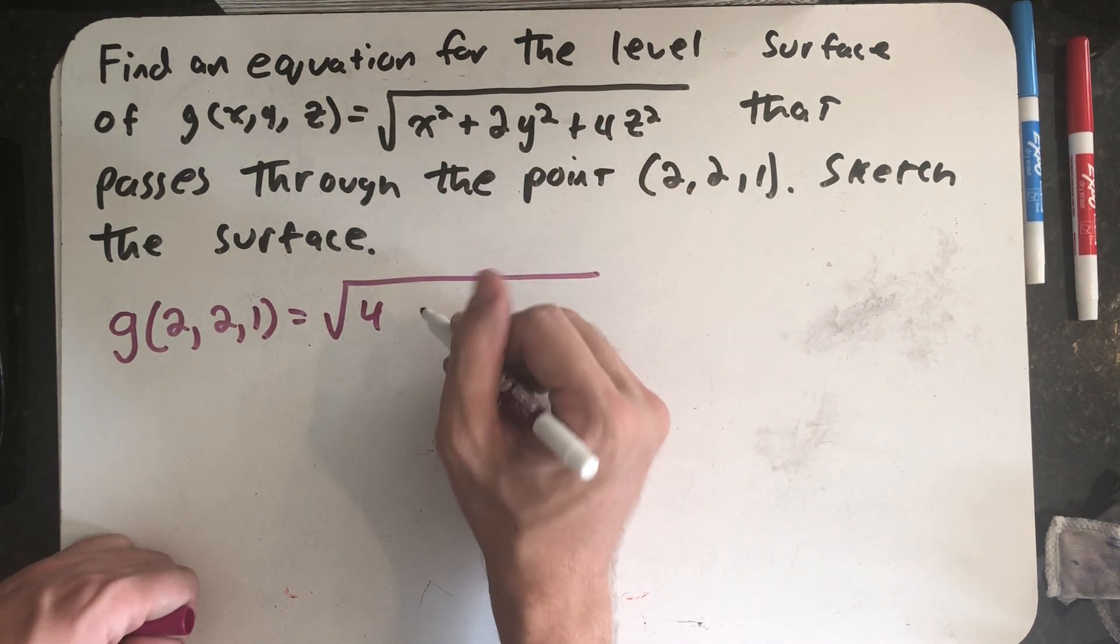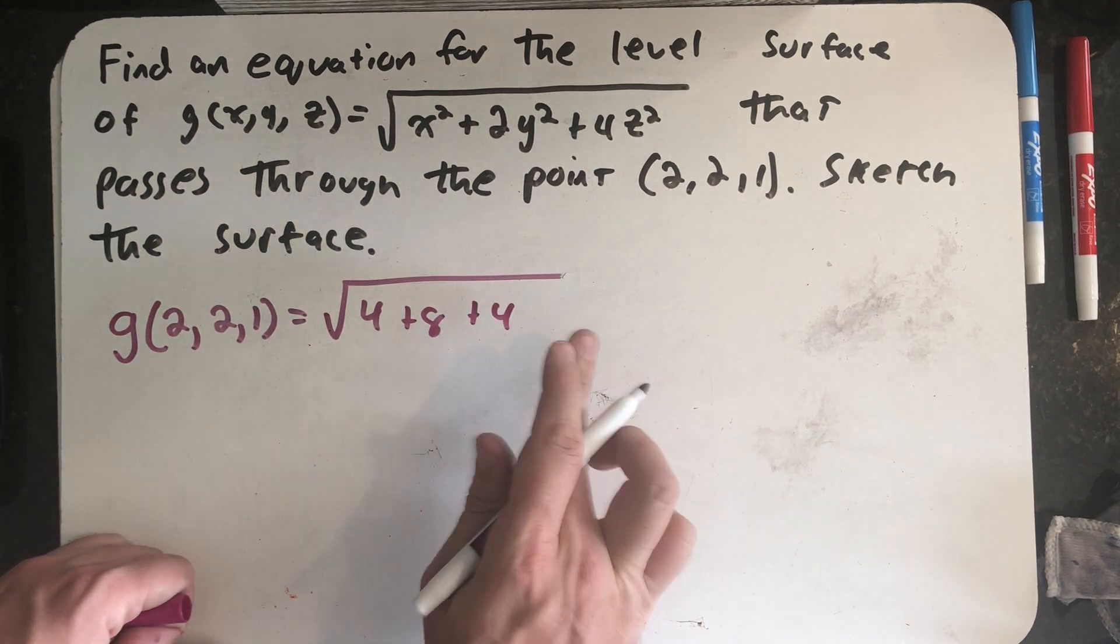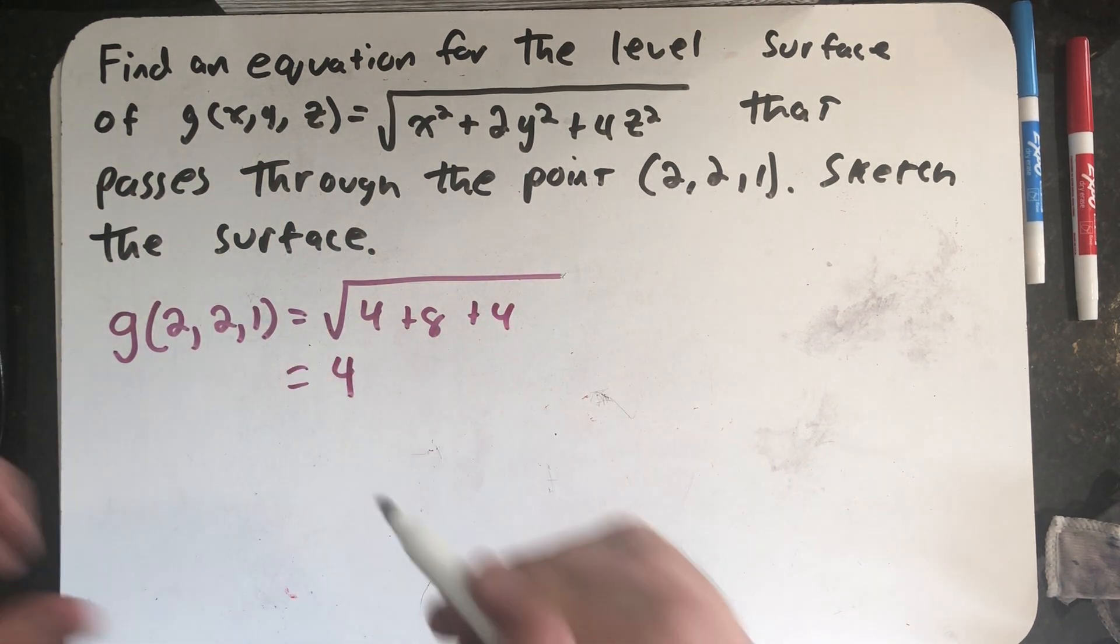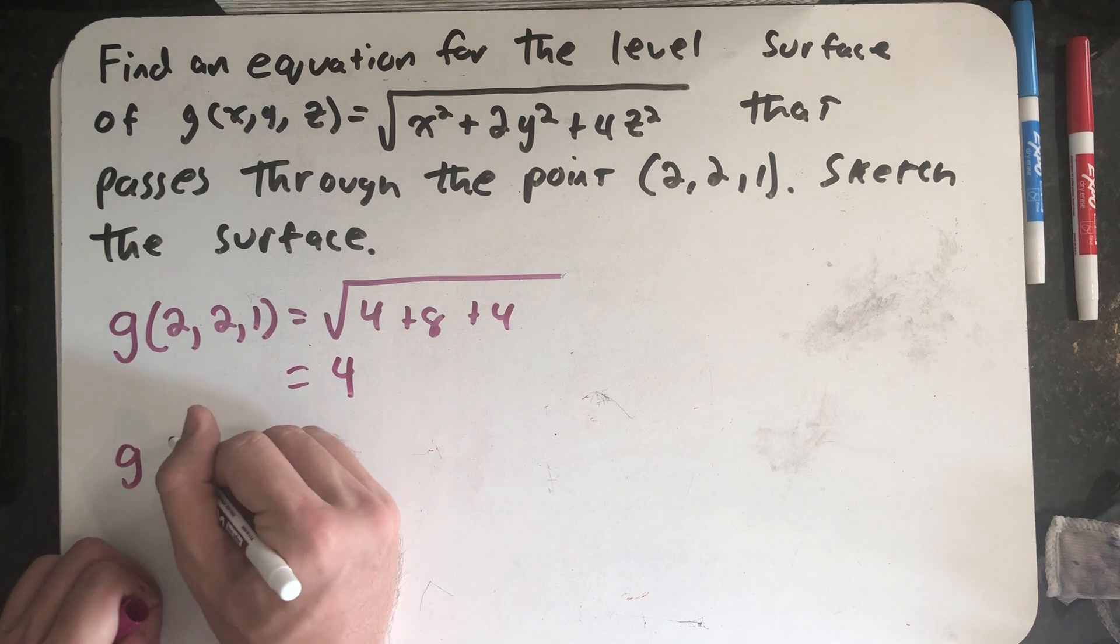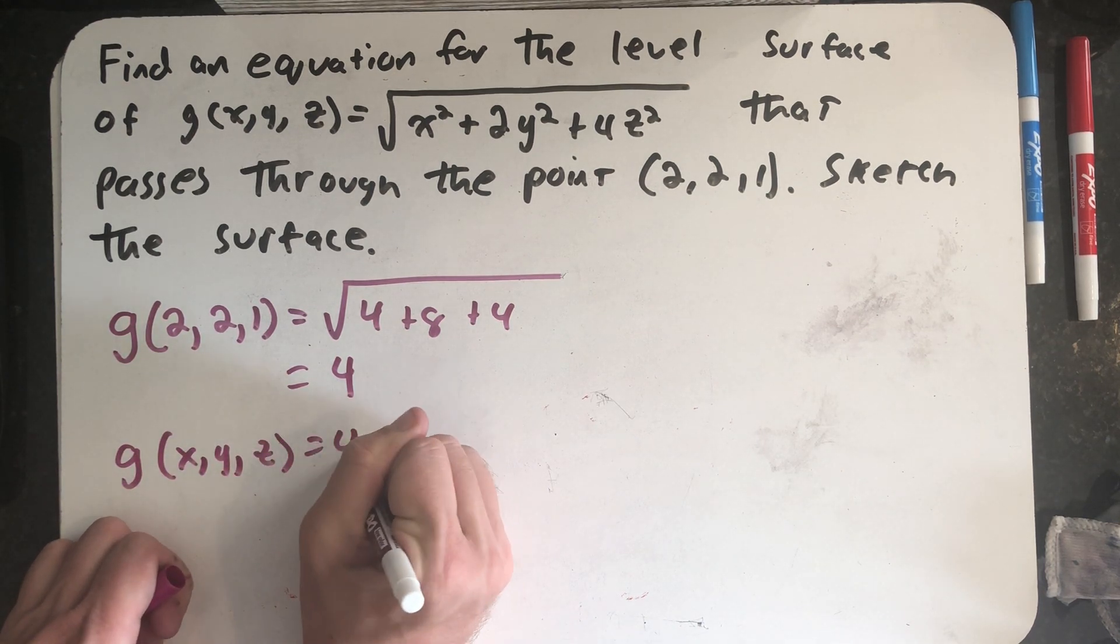4, 4 times 2 is 8, and then I just get another 4. Let's see, 12, 16, 4. The level surface I'm supposed to sketch is the one where the function is equal to 4.